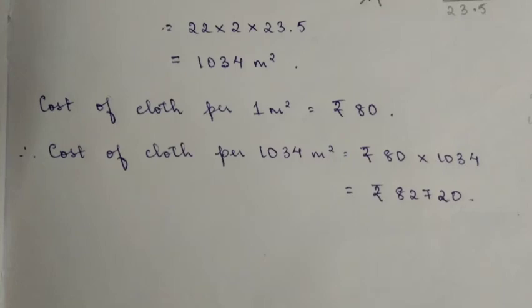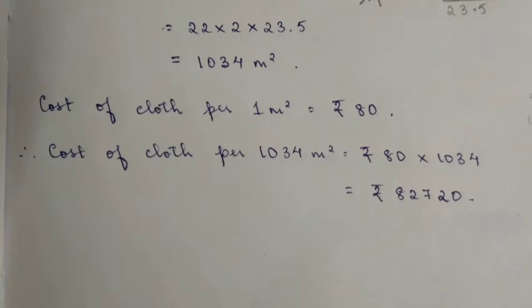Now for the cost of cloth: the rate is 80 rupees per square meter. Therefore, the cost of cloth per one square meter is rupees 80. We need 1034 square meters, so the cost of cloth for 1034 square meters equals 80 multiplied by 1034, giving us the final answer.